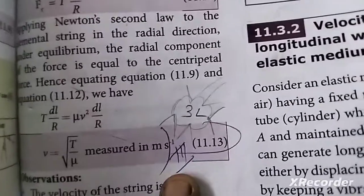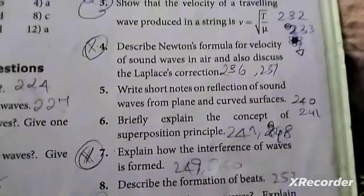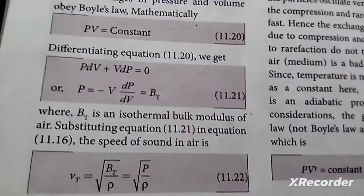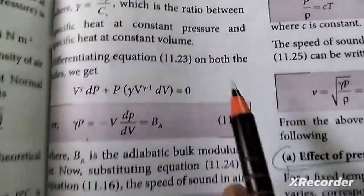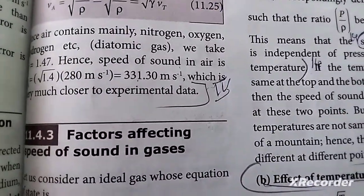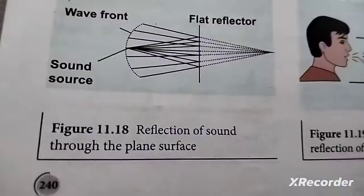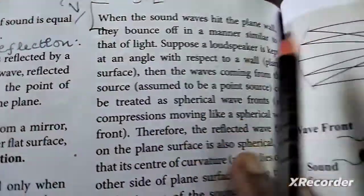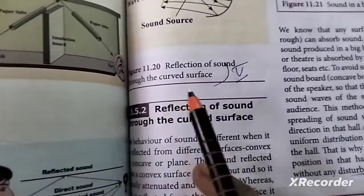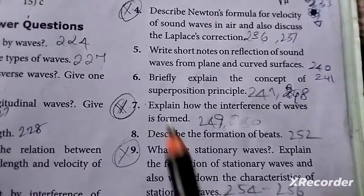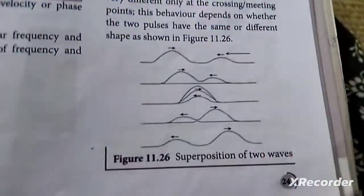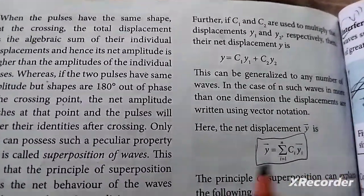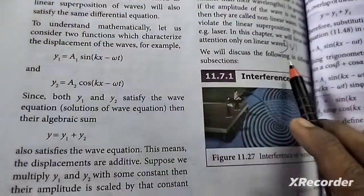The next question answer is pages 236 and 237. 4th question answer is here. 5th question answer is page 241. This is the 5th question answer. The response answer is page 247. 6th question answer is also page 247.